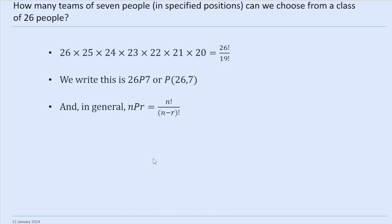By the way, if I was at school, I would not have been picked in this team — I was often picked last, although things have got better since then. Anyway, the point is this number — the number of ways of choosing 7 people from 26 where we care about the order — is written as 26P7, or P(26, 7). In general, nPr is n factorial over (n minus r) factorial. In this case, we've got 26 factorial on top and 26 minus 7, which is 19 factorial, on the bottom.